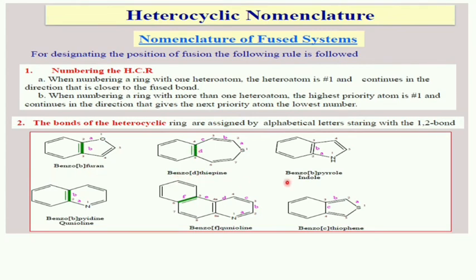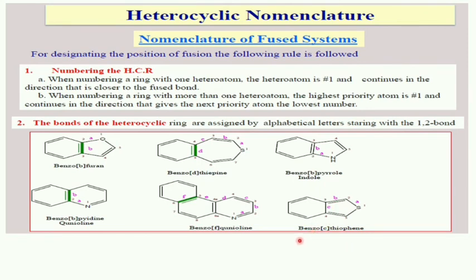For benzopyrrole (pyrrole fused with benzene at the B portion), it is benzo[b]pyrrole, which is 1H-indole. For quinoline, the ring is benzo[b]pyridine. In benzo[f]quinoline, the bonds of quinoline are labeled A, B, C, D, E, F, and benzene attaches at the F bond. For thiophene numbered 1 through 5 with bonds A, B, C, when benzene attaches at bond C, it is benzo[c]thiophene. Understanding which bond attaches the ring system is the key to the nomenclature.